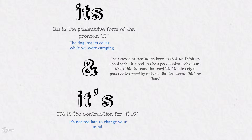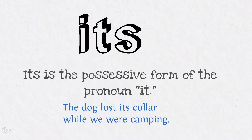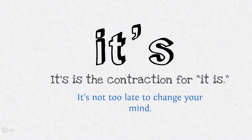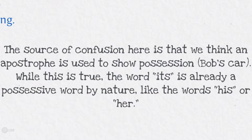Its and it's. Its is a possessive form of the pronoun 'it': 'The dog lost its collar while we were camping.' It's is the correct contraction for 'it is': 'It's not too late to change your mind.' The source of confusion is that we think an apostrophe shows possession, such as for Bob's car — while this is true, the word 'its' is already a possessive word by nature, like the words 'his' or 'her.'